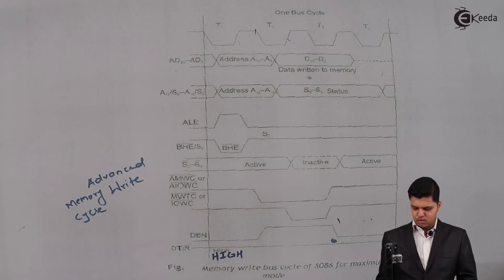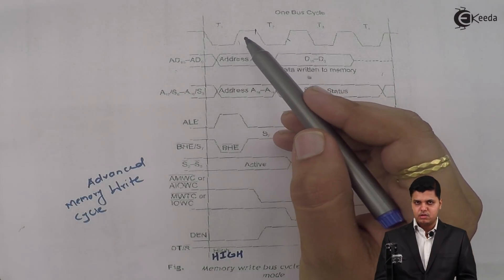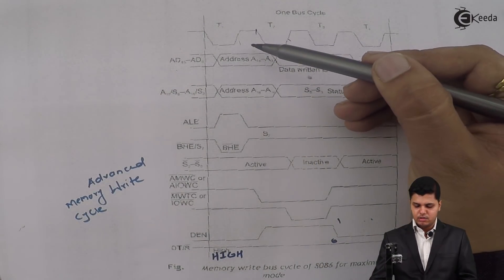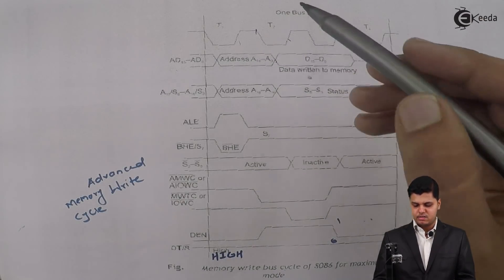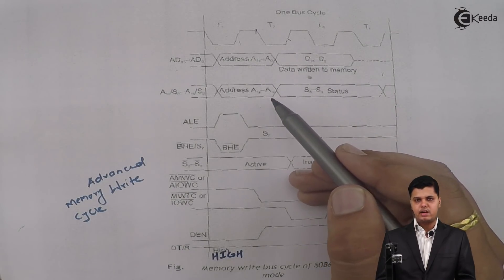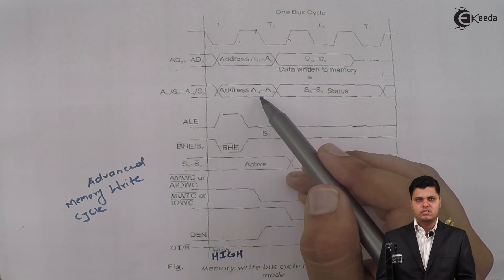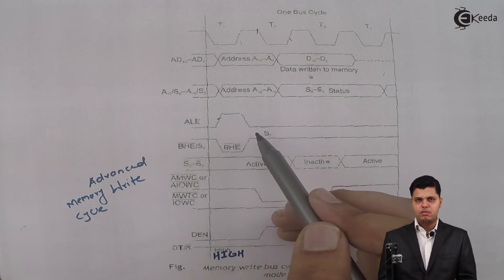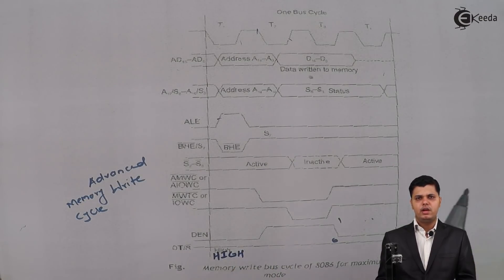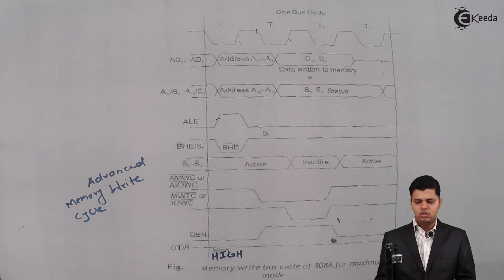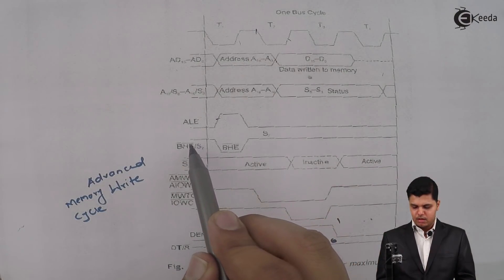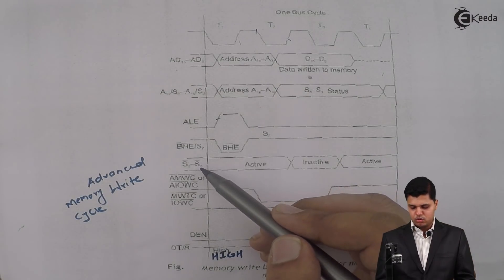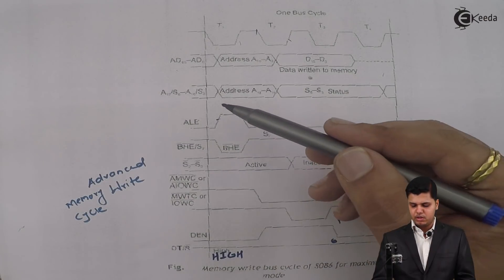In the memory write bus cycle of the 8086 microprocessor in maximum mode, in the T1 state the multiplexed address and data bus carries address A0 to A15, and the multiplexed address and status bus carries A16 to A19. For latching this address, address latch enable becomes active, enabling the external 8282 latch. After that, BHE and S7 bar goes high or low depending on whether it is an even or odd address bank, and the S2 to S0 signals become active to enable the required control signals.